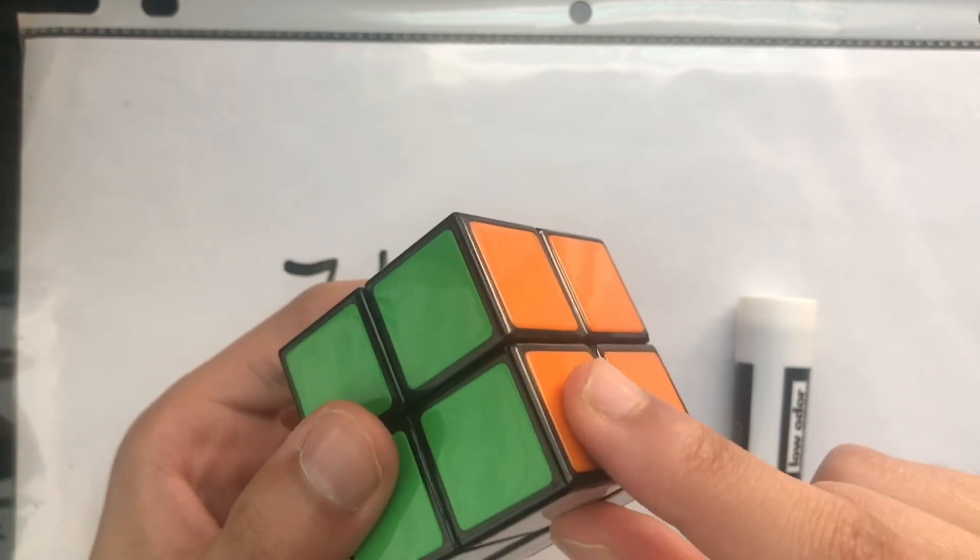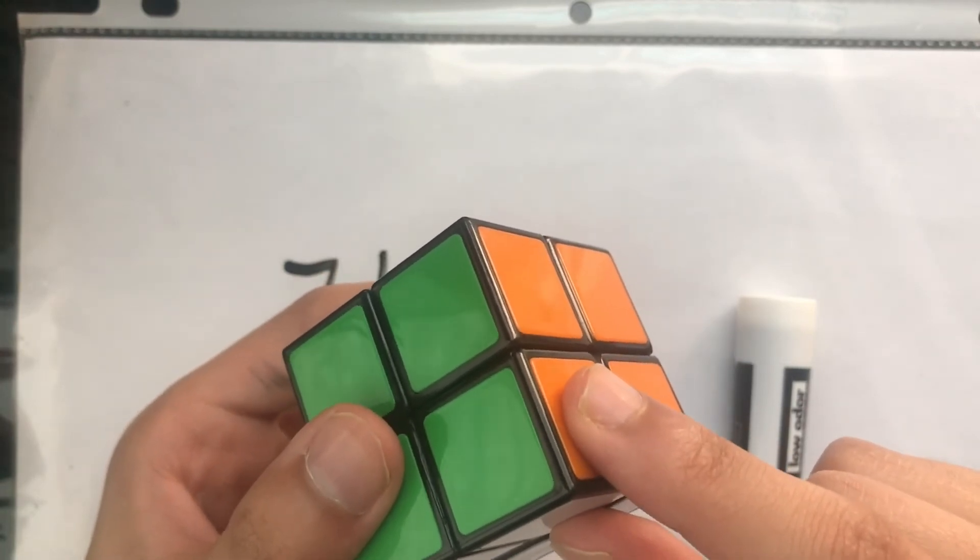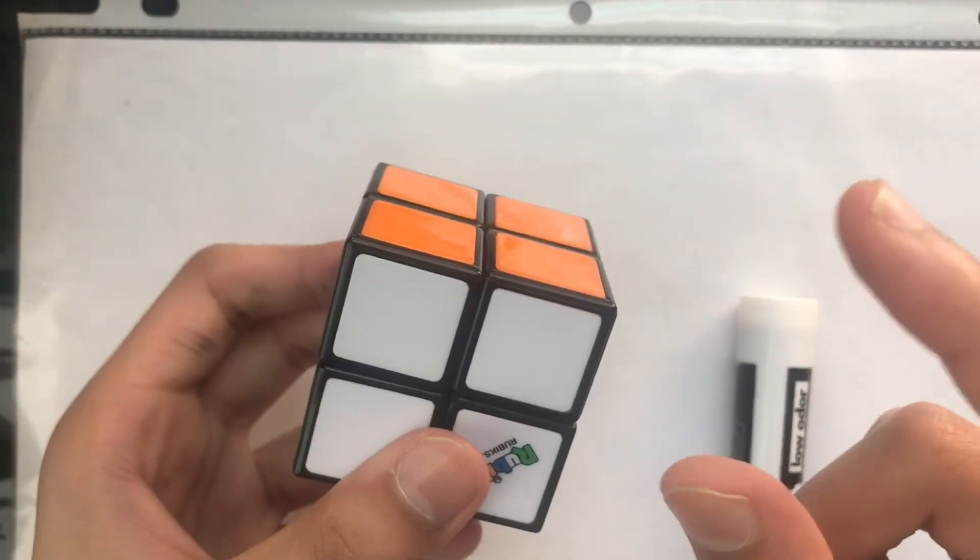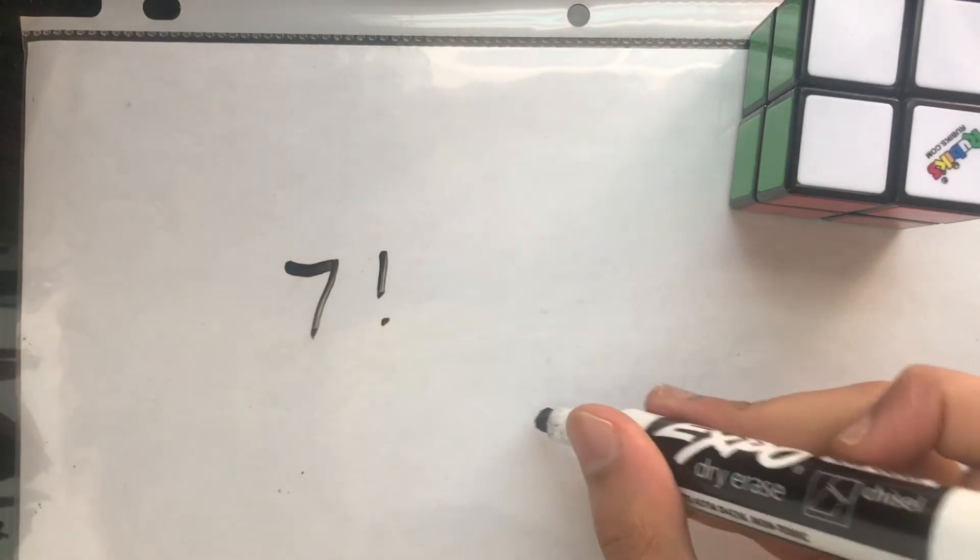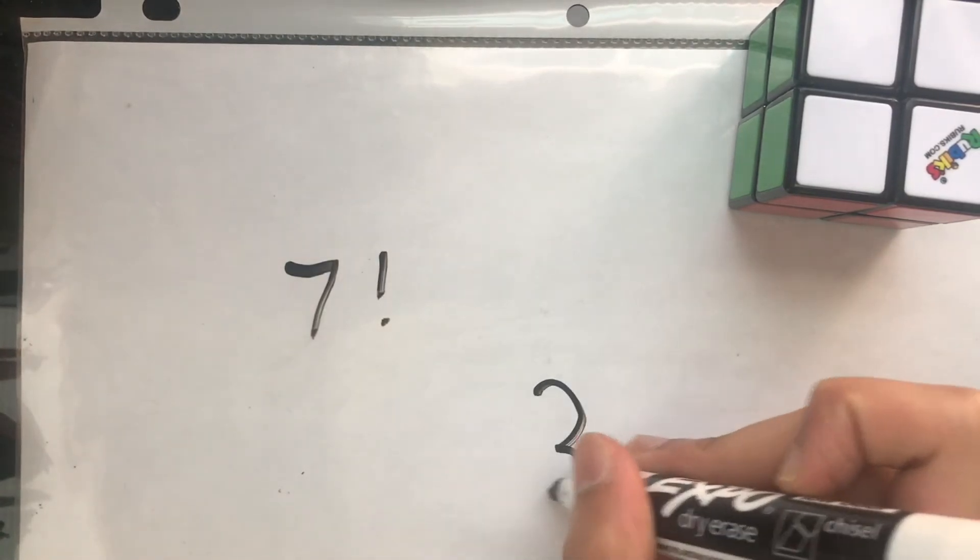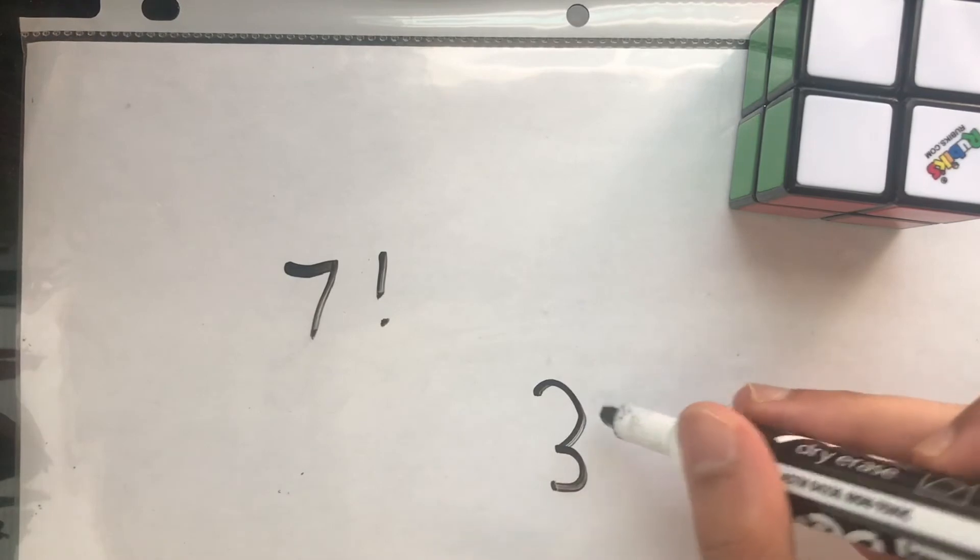So it has 3 colors so it can be oriented in 3 ways. And the orientation of the 7th one is fixed. So since the 7th one is fixed, this gives us 3 to the power of 6.